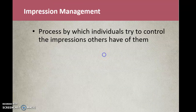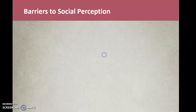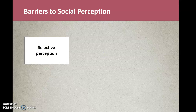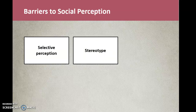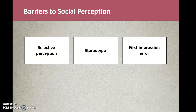Let's look at the barriers to social perception in detail. The first is selective perception — we prefer information that supports our views, so we look very selectively at how we view a situation. We also stereotype, which means generalizing about a group of people. We look at attractiveness, and we also have first impression error — we tend to remember what we perceive the first time we see a person.